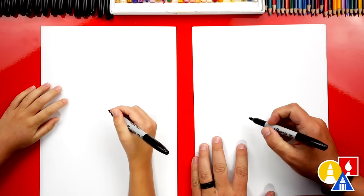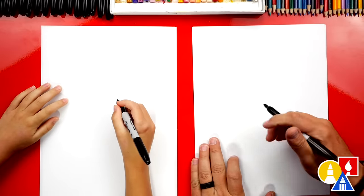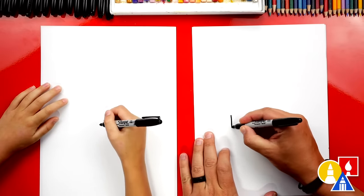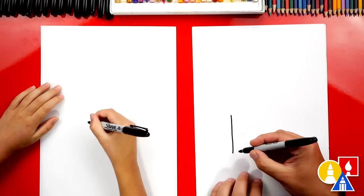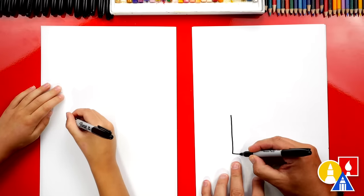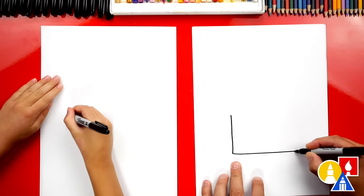Let's start. We're first going to draw a rectangle shape down here towards the bottom of our paper. We're going to draw a letter L, so we're going to do a short line down and then a longer line across.